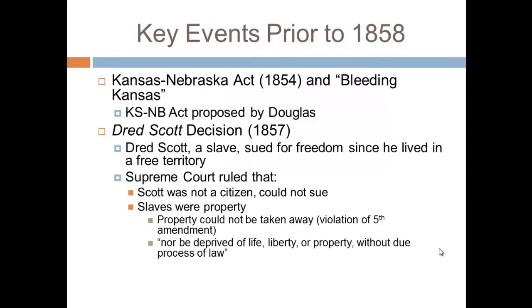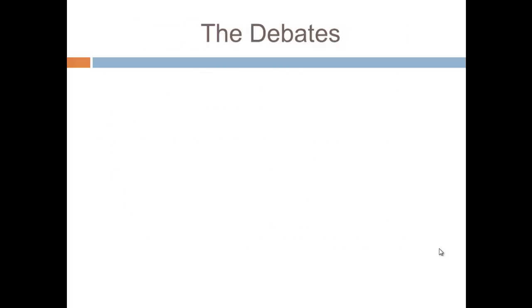Part of the text of the Fifth Amendment says: 'Nor be deprived of life, liberty, or property without due process of law.' Because slaves were deemed property by the Supreme Court, they could not be taken away. This is easily one of, if not the worst, court case decisions in United States history.